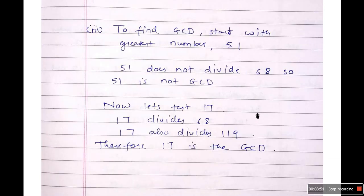That's it for today, guys. This is how we find GCD. I taught you two methods — the standard form method and a shortcut method — to find the greatest common divisor or highest common factor. We've seen a lot of examples. If you have any doubts or queries, feel free to ask in the comment section below. Please subscribe to my channel, share my video, and if you want me to make videos on any other topic, feel free to ask in the comments. Thank you.